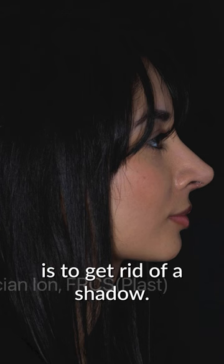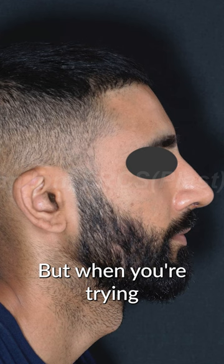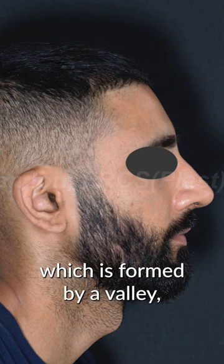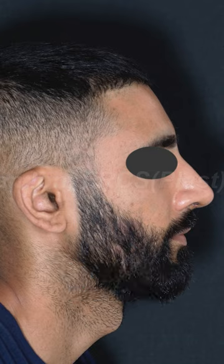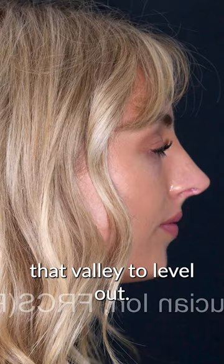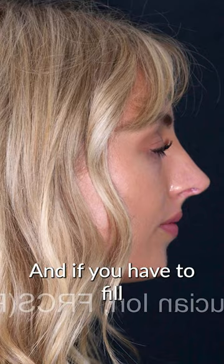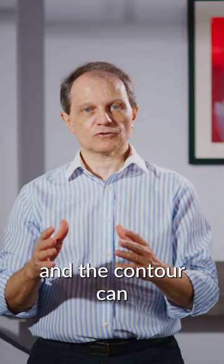What we're trying to do is get rid of a shadow, but when you're trying to get rid of a shadow which is formed by a valley, you're looking at how much you have to fill that valley to level it out. If you have to fill too much, the contour can look wrong.